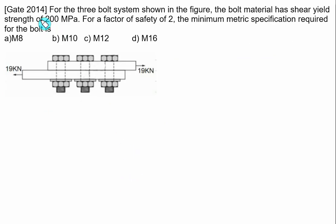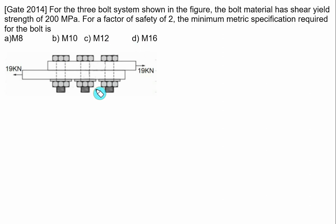A numerical from the 2014 exam for a three-bolt system: the bolt material has a shear yield strength of 200 MPa, factor of safety is 2. We must find the minimum metric specification — whether M8, M10, M12, or M16 is suitable. A force F = 19 kN is applied. All three bolts fail in single shear with shear area equal to pi/4 × D².